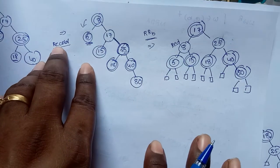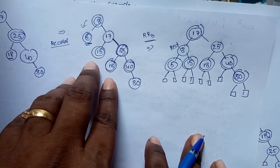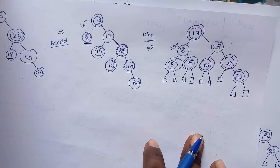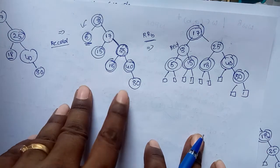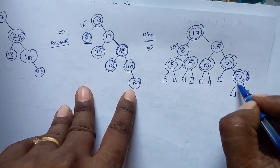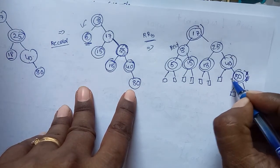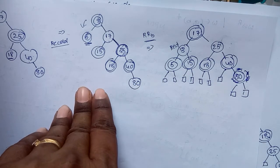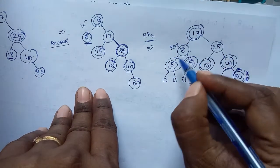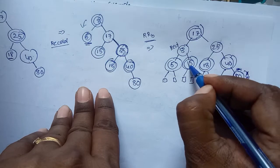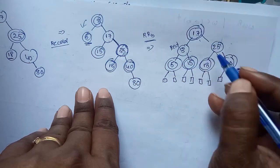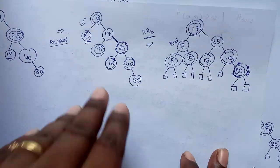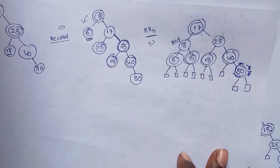Now check all properties: no two consecutive red nodes are present. Observe the black height — node 80 is red. In any path from root to external node, the black height is 3, confirming the black height is the same for all paths.